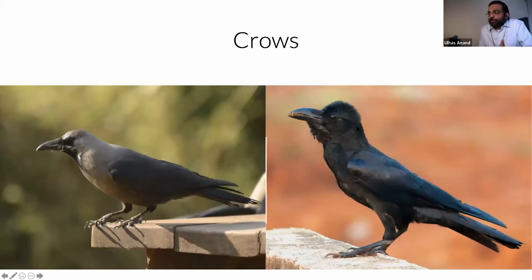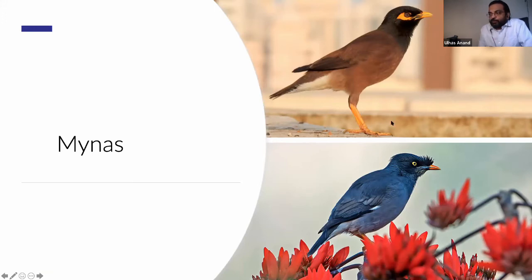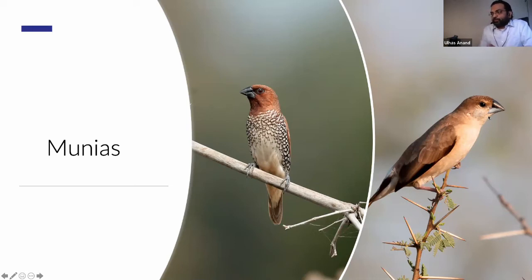Bangalore has two crow species: the house crow with a gray neck, and the jungle crow or large-billed crow which is all black and has become more common. There are also two myna species: the common myna with a yellow patch around the eye, and the jungle myna with a tuft of feathers at the base of its beak. Munias are also found - the scaly-breasted munia (formerly spotted munia) and the Indian silverbill (formerly white-rumped munia) - both nesting around houses in Bangalore, including in the speaker's own balcony.